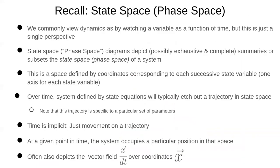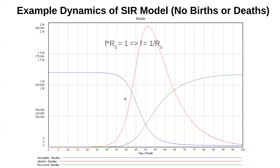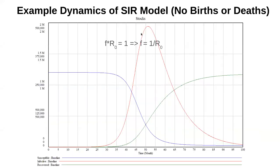The key throttle here is the susceptible fraction — that's the key limiter for how infection spreads. If the number of susceptible people drops beyond a certain point, the infection can't spread sustainably; it dies out. Each infective can't even infect one person before they recover. The key throttle is the susceptible fraction f, and at the epidemic peak, f equals one over the basic reproductive number R0. What is R0?